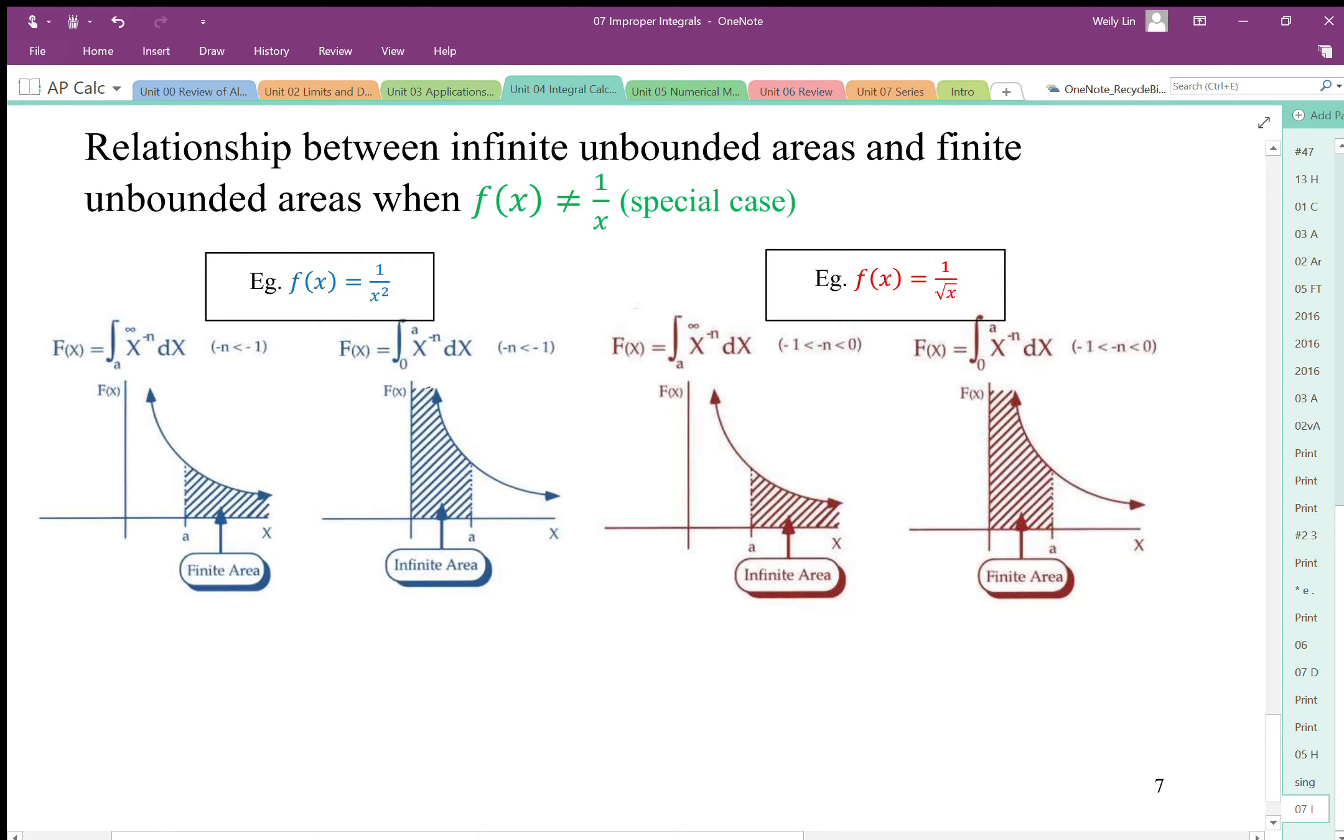So for 1 over x squared, 1 over x cubed, this is the case. So this side would be infinite, this area is infinite, whereas this area is finite.